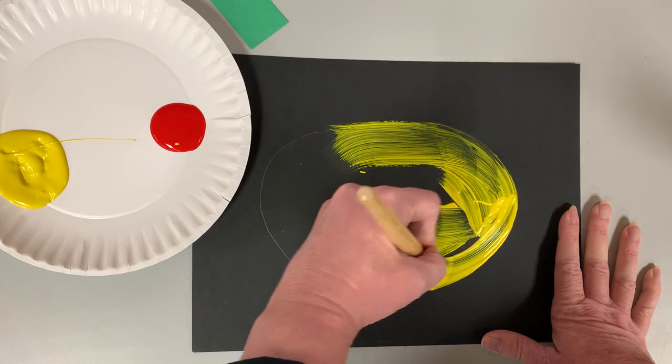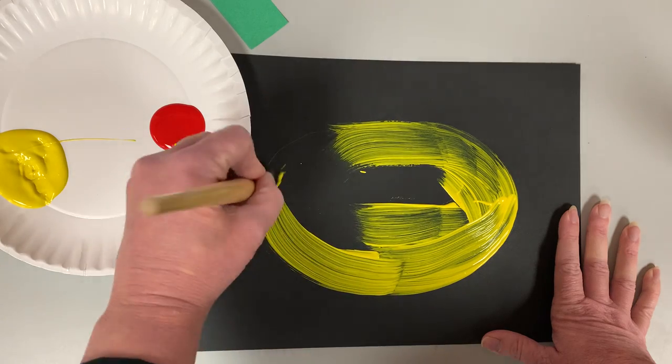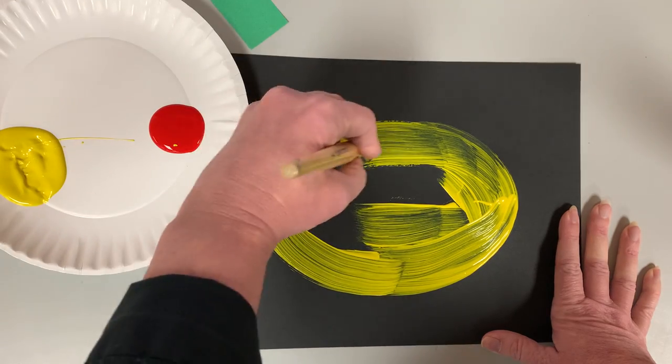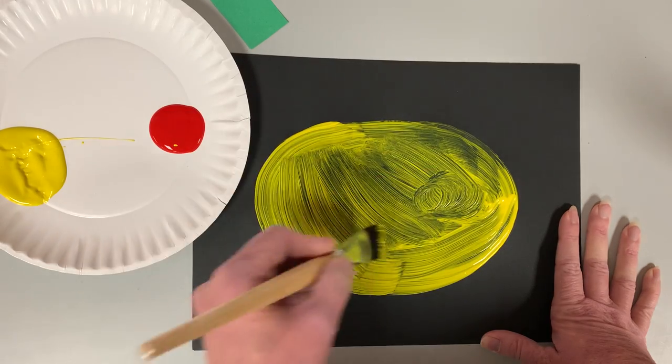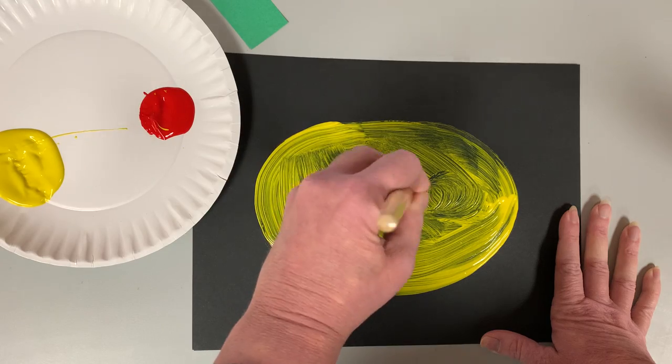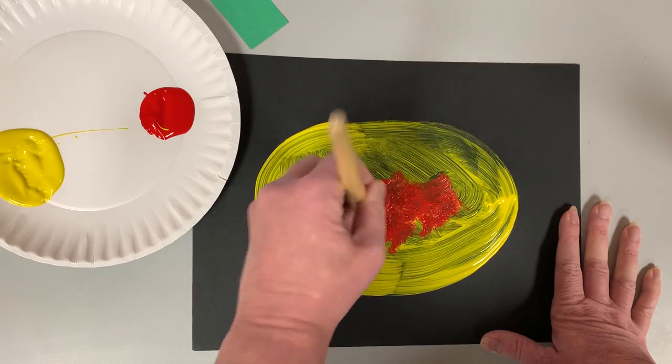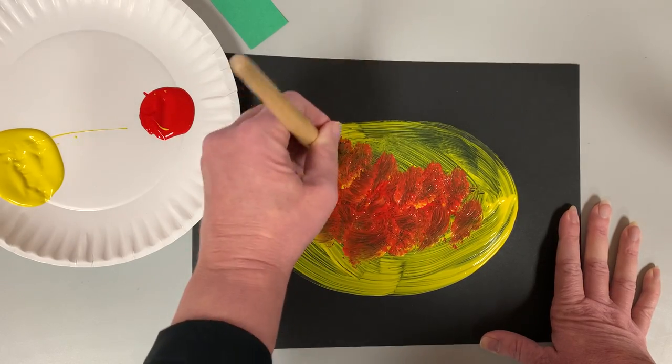I always do my edge first, fill it in. Once I get this done I'm gonna add a little bit of red to it and this time I'm gonna go up and down and mix it. Do you see how the red is now turning orange?